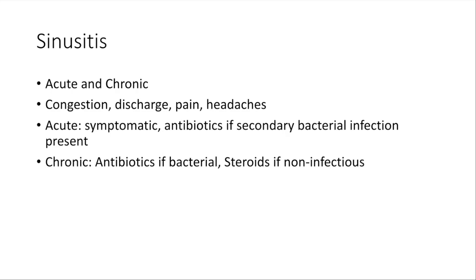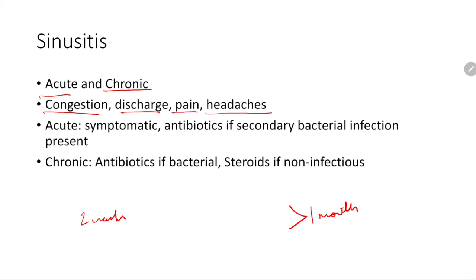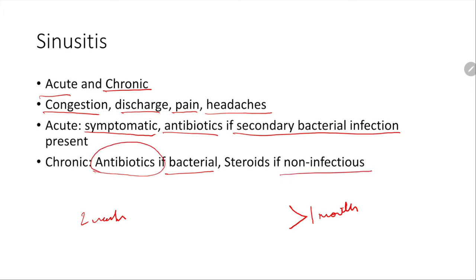Sinusitis can be acute or chronic. Acute sinusitis is when symptoms last about two weeks; chronic is when they persist beyond one month. Presenting complaints include congestion, discharge, facial pain, and headaches. Acute sinusitis is treated symptomatically — like a common cold — but secondary bacterial infection requires antibiotics. Chronic bacterial sinusitis requires prolonged antibiotics; if non-infectious or inflammatory, steroids are the treatment.